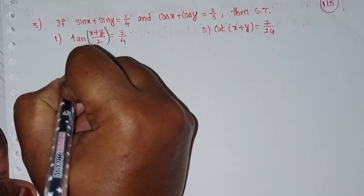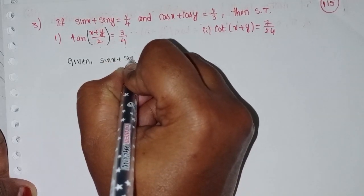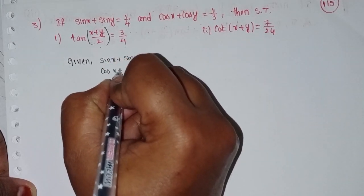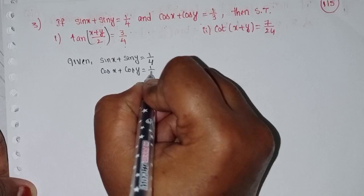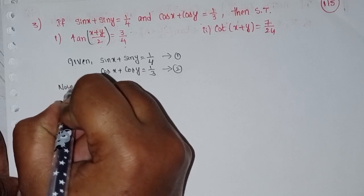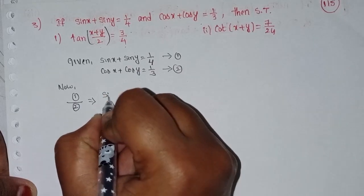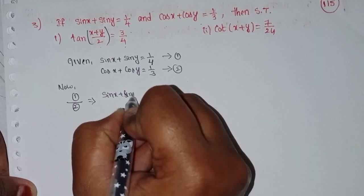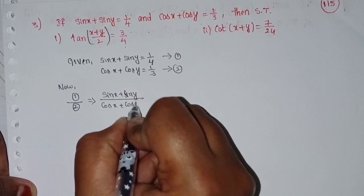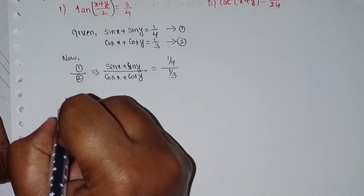First of all, given: sin x plus sin y equal to 1 by 4 — equation 1; cos x plus cos y equal to 1 by 3 — equation 2. Now, dividing equation 1 by equation 2: (sin x plus sin y) by (cos x plus cos y) equals (1 by 4) by (1 by 3).